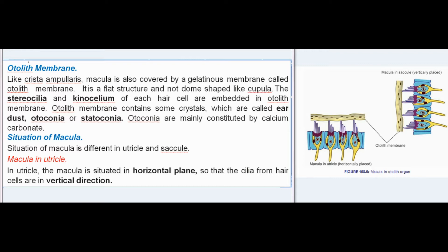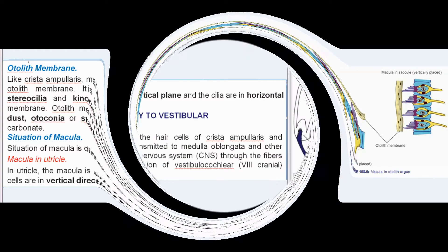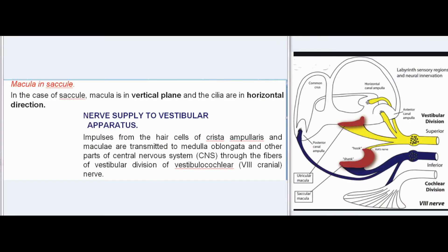The situation of the macula differs in the utricle and saccule. In the utricle, the macula is situated in the horizontal plane so that the cilia from hair cells are in the vertical direction. In the saccule, the macula is in the vertical plane and the cilia are in the horizontal direction.